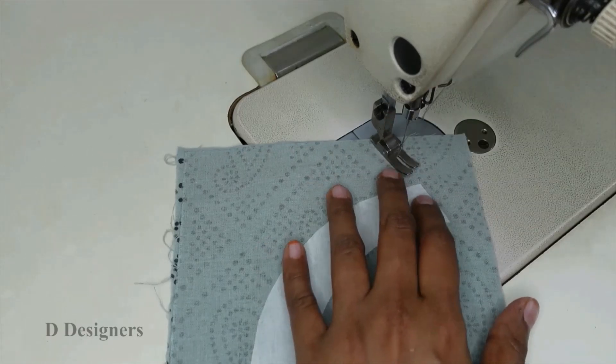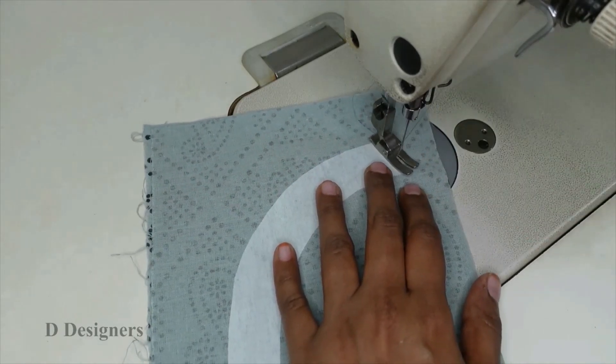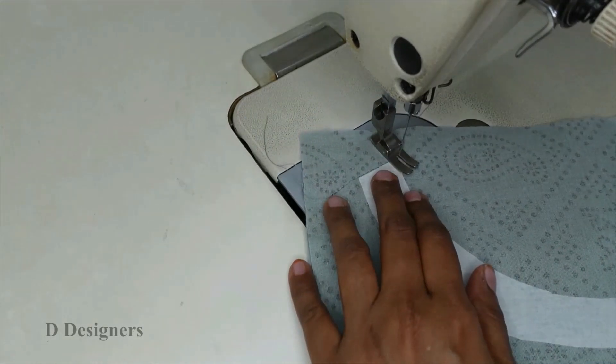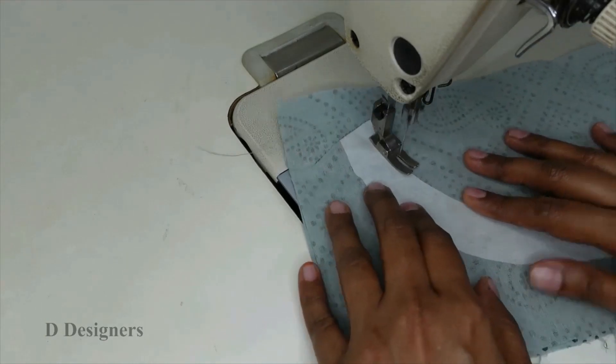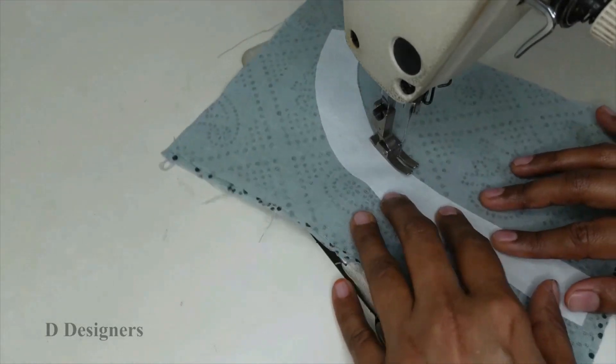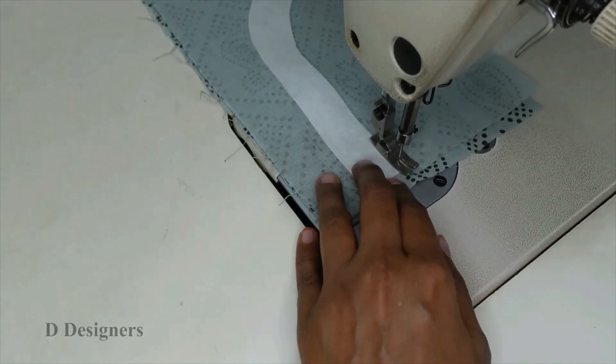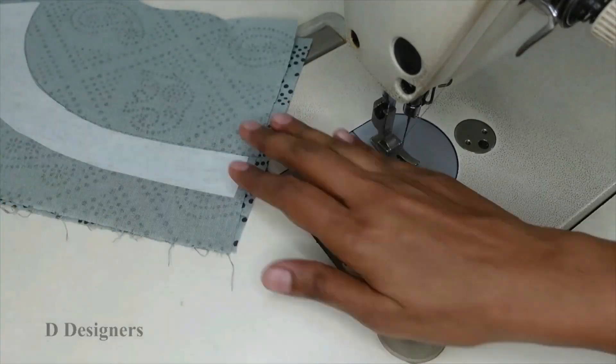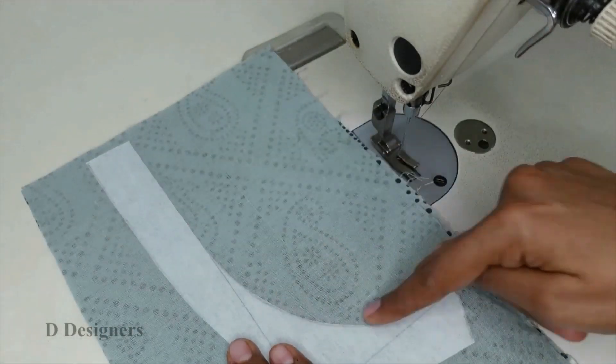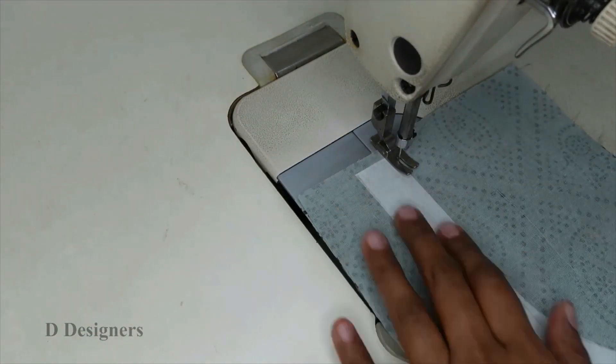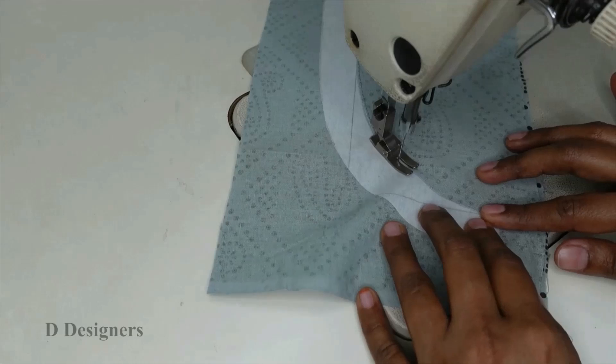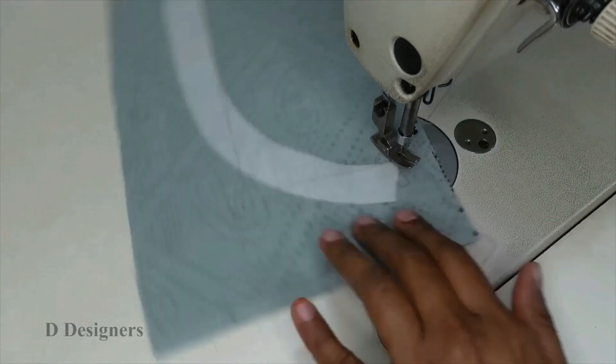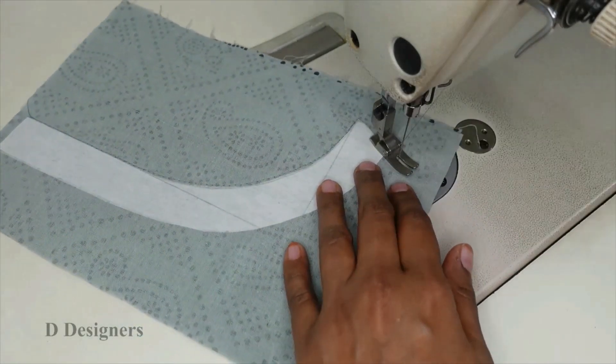Now start from the bottom. Do it carefully when you come to the corner. Take the other one. Same way I am going to give the stitch. Now I am going to make a stitch, finish at the bottom.